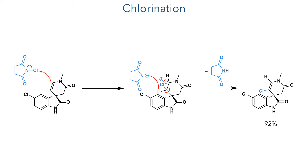This newly formed alkene was then chlorinated with NCS. This is an electrophilic chlorinating reagent that is first attacked by the double bond, producing a chloronium intermediate that is then deprotonated by the succinimide, reforming the double bond.